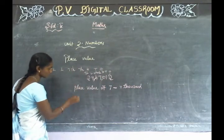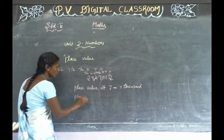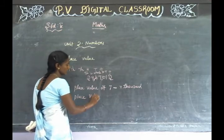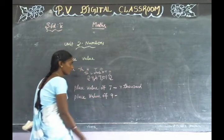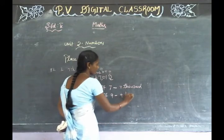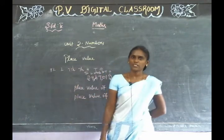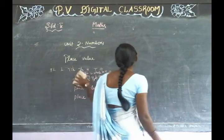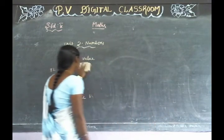Then next: nine. Place value of nine — nine lakh. So this lesson, place value, we will write. Then next topic: comparison of numbers.